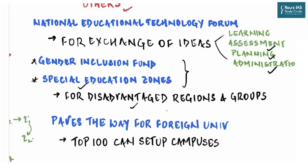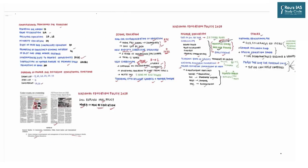One of the most debatable provisions is that NEP paves the way for entry of foreign universities into our country. Though the Foreign Education Institutions (Regulation of Entry and Operation) Bill was laid before Parliament in 2010, it remained in news. NEP 2020 states that the world's top 100 universities shall be facilitated to operate in the country through a new law. Expect many editorials supporting and opposing this provision. The NEP notes and key features of NEP 2020 shall be provided in the PDF — try to memorize especially the constitutional provisions.